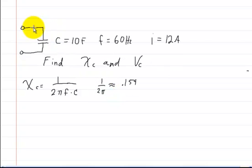Here, you'll notice I have one capacitor, and it has a capacitance of 10 farads. The power supply has a current going through it, and the frequency of that is 60 hertz. The current is 12 amps. I want to find the capacitive reactance of this capacitor and the voltage on the capacitor.